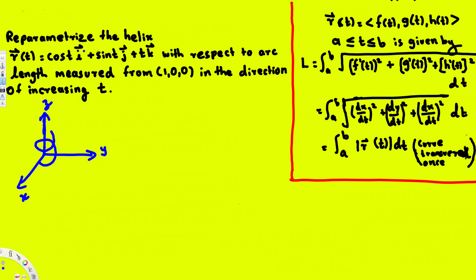Here we have the equation. The first step is to find the derivative. So r prime is going to be: the derivative of cos(t) is minus sin(t) in the i direction, the derivative of sin(t) is cos(t) in the j direction, and the derivative of t is just 1, so we have 1k in the k direction.